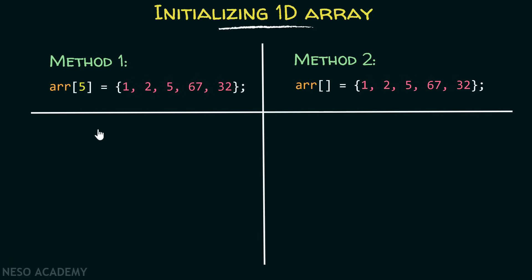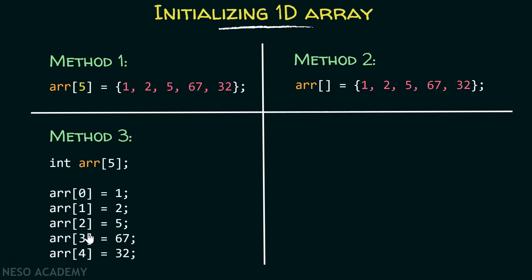Now let me discuss method number three. Here you are first declaring the array, and in this case you have to specify the length. This is the only case where specifying the length is required — otherwise it will produce an error. Then, one by one, in these indexes, you are entering the elements. This is another way of initialization.